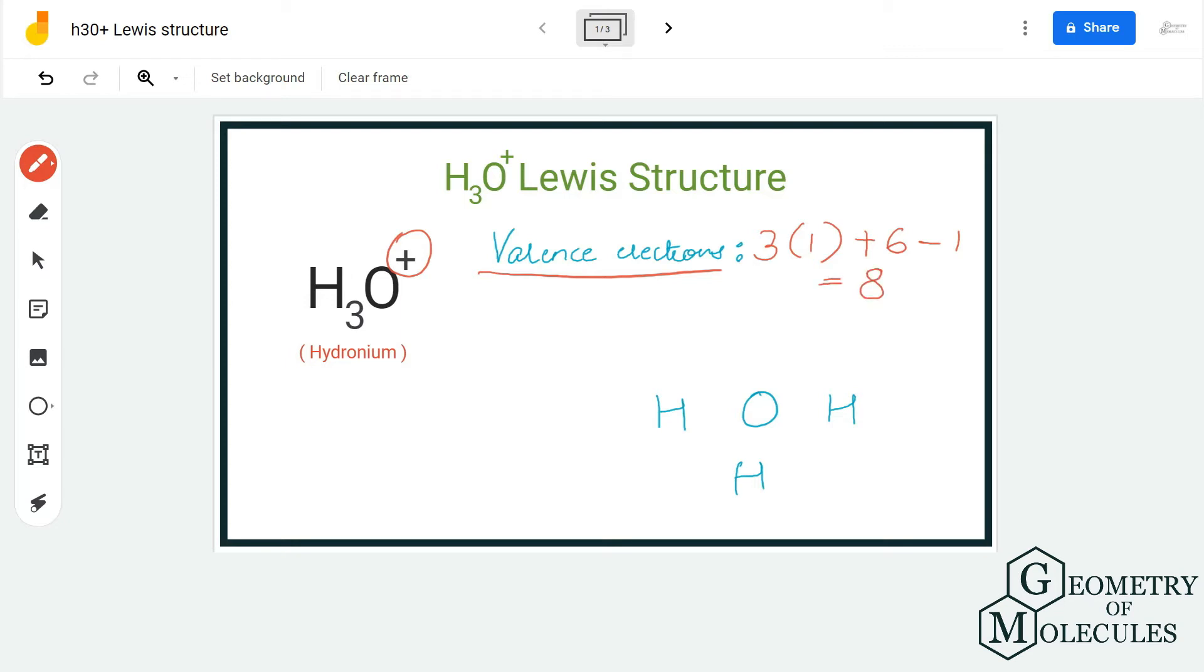Whenever there is a plus charge, it means the ion is giving away one electron, and when there is a minus charge, it means it is accepting an additional electron. So here, as it is giving away one electron, we are going to subtract that. In total now we have eight valence electrons for this ion.